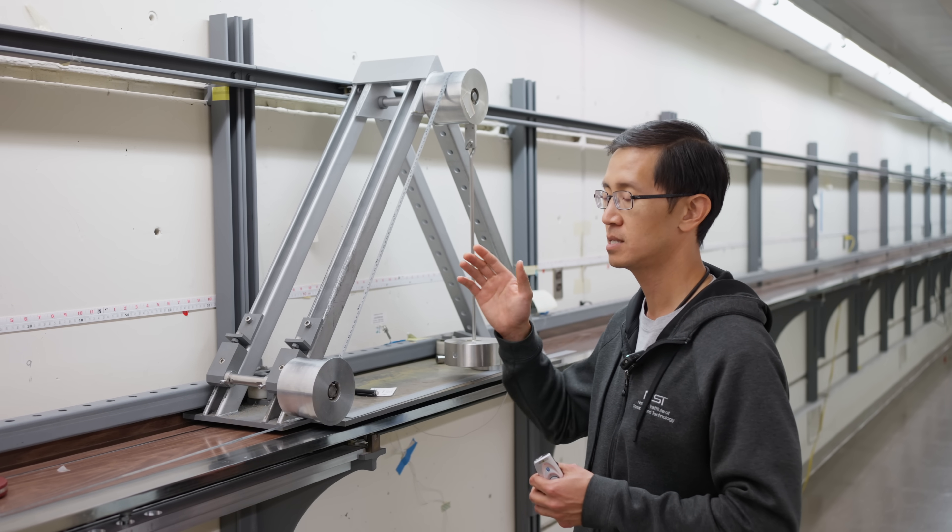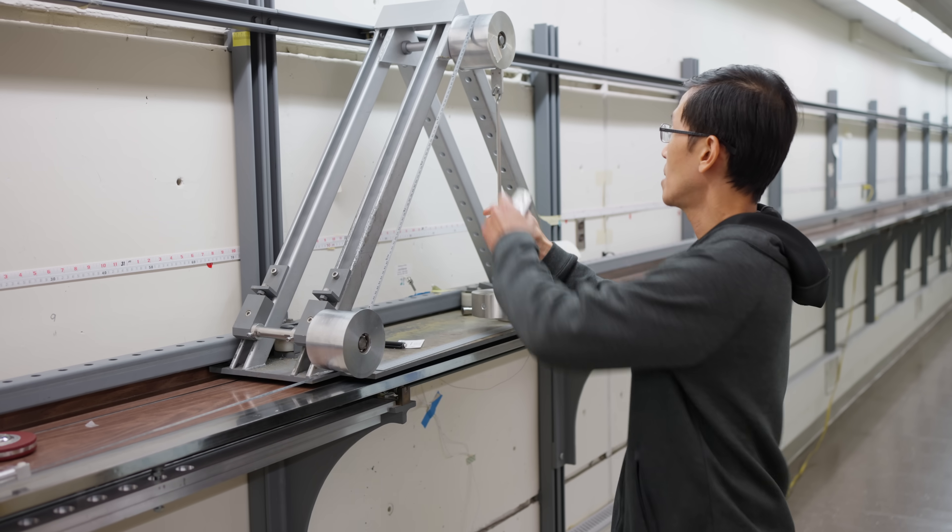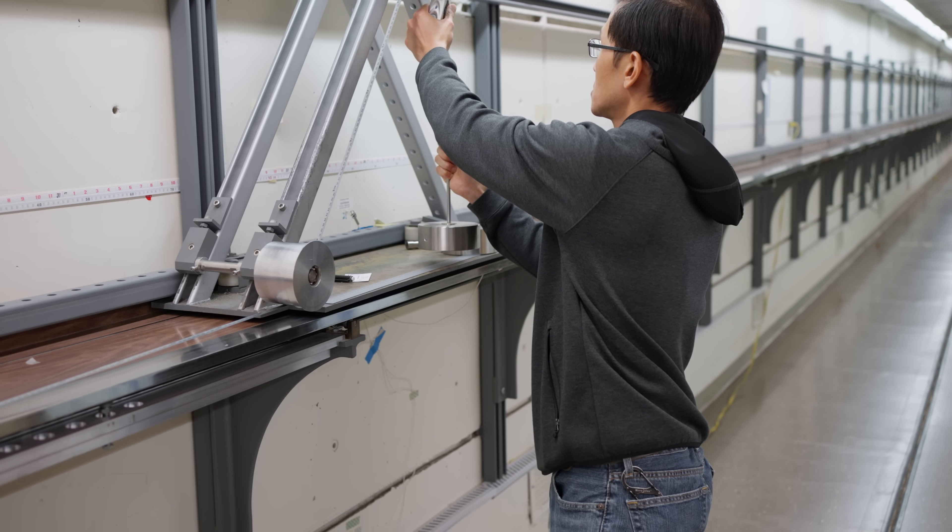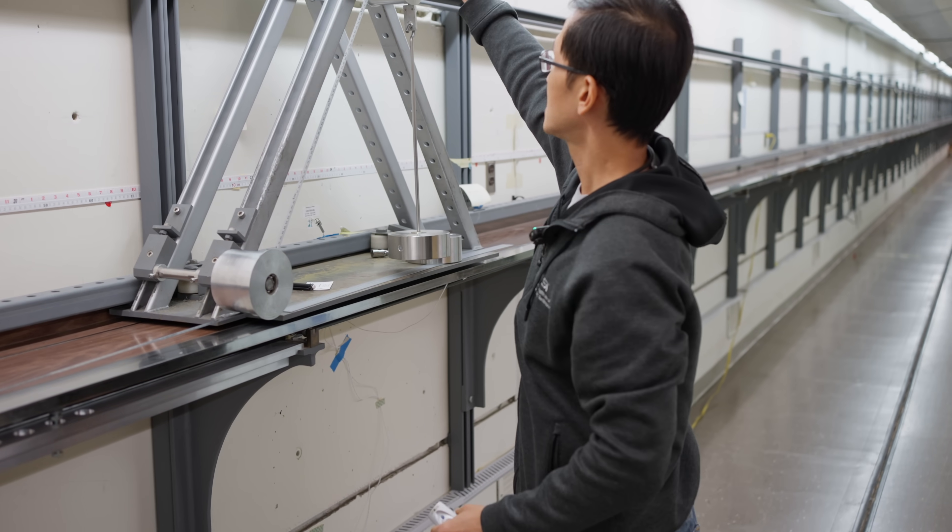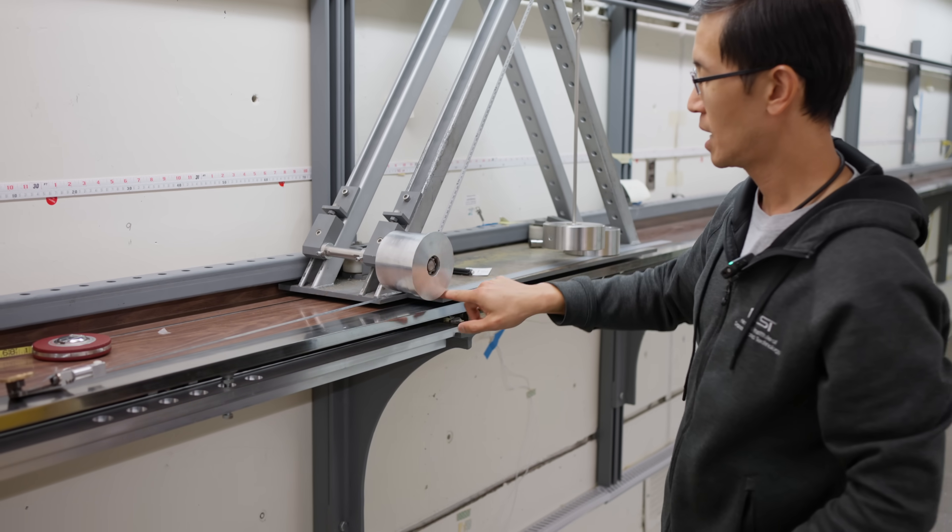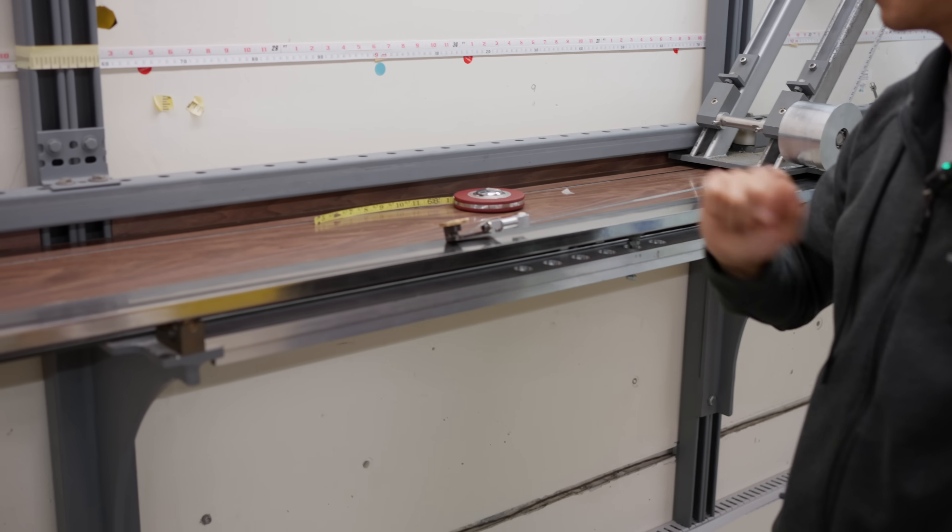So, right now, this is a 7-meter-long tape. I have 5 kilograms applied to it. So, it's simple, deadweight loading. So, it hooks onto here. There is a metal tape, which goes along this pulley and runs along here and clamps onto the tape being tested.